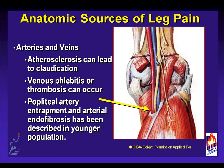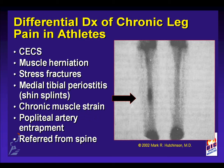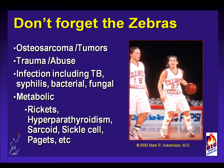Therefore, the differential diagnosis of chronic leg pain in athletes is rather extensive, including chronic exertional compartment syndrome, muscle herniations, stress fractures, medial tibial periostitis (commonly known as shin splints), chronic muscle strains, popliteal artery entrapment, and pain referred from the spine. We cannot forget the significant but rare diagnoses including osteosarcoma or other tumors, trauma and abuse, infection including TB, syphilis, bacterial and fungal, or metabolic sources such as rickets, hyperparathyroidism, sarcoid, sickle cell, or Paget's disease.